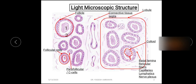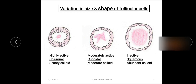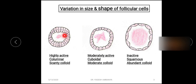This is something regarding the light microscopic structure of the thyroid gland. Now in this schematic diagram you can see the variation in size and shape of the follicular cells according to activity. First, the follicle with columnar-type follicular cells represents the highly active stage. In the center of this follicle you can see the colloid, but it is scanty — scanty colloid is present within the highly active thyroid follicle.